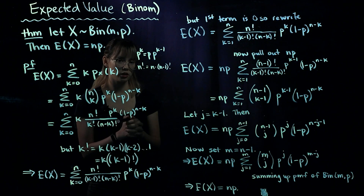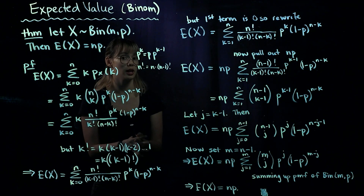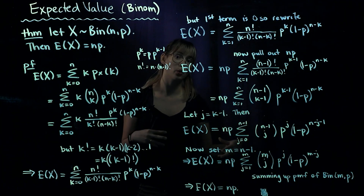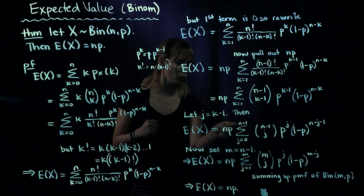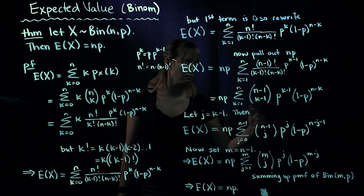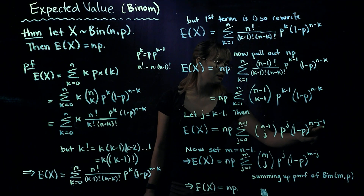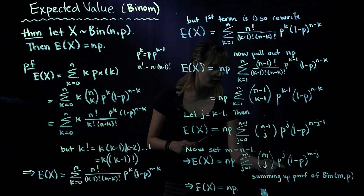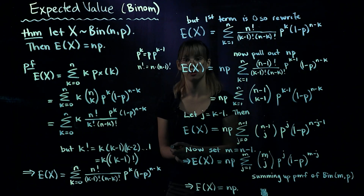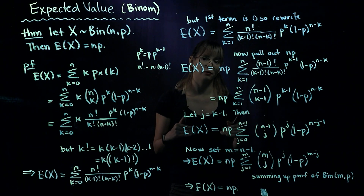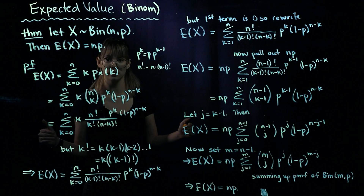Next, we set m equals n minus 1, replacing all instances of n minus 1. The sum goes up to m, n minus 1 choose j becomes m choose j, and 1 minus p to the n minus 1 minus j becomes 1 minus p to the m minus j. Now we see that this is the PMF for a binomial distribution with m trials and probability of success p. So we're summing over the entire PMF for that binomial, and when we add up all values of a PMF we get 1.